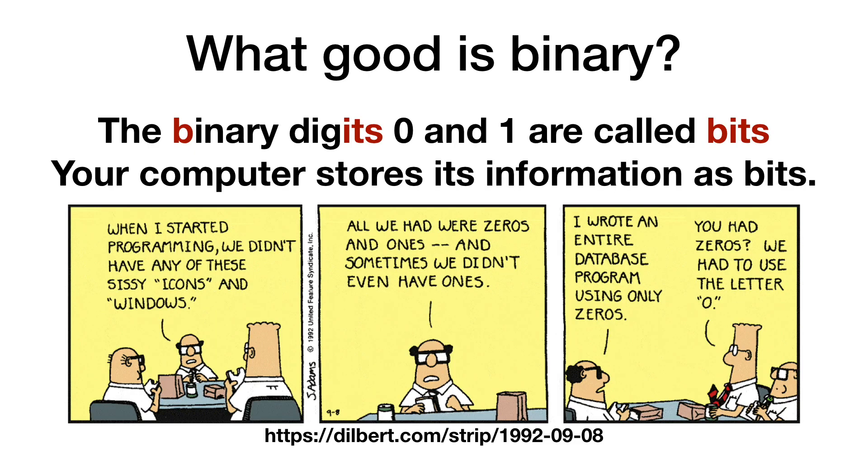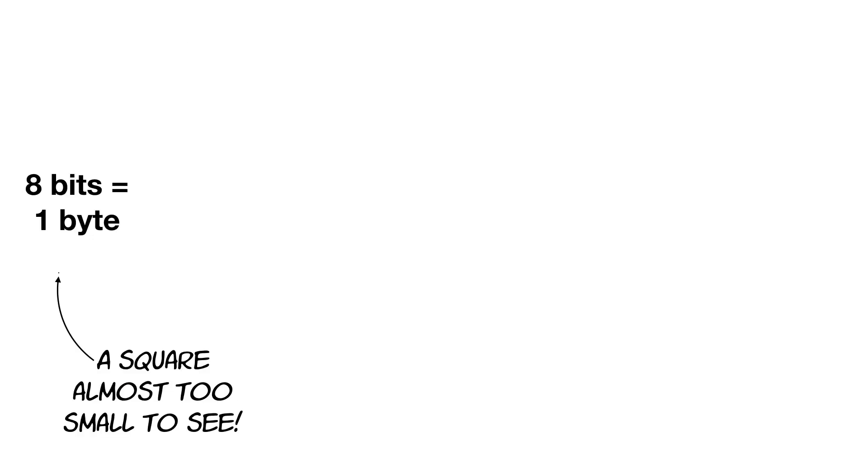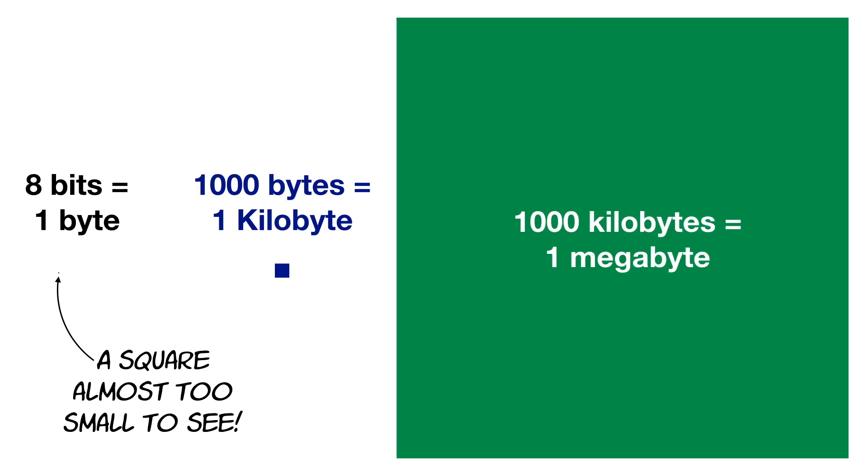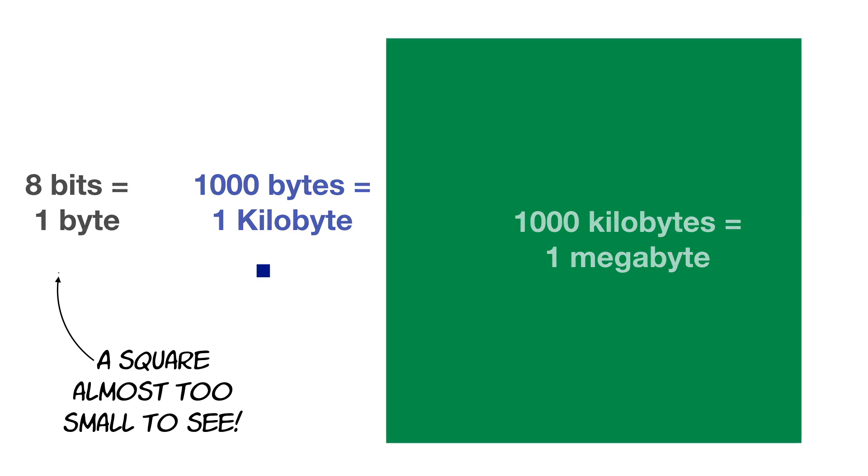You might be wondering, what good is binary? What's it used for? It turns out that it's used for a lot of things. Your computer stores all of its information using 0s and 1s. You might have heard of bits before. Well, bits is just a fancy word for binary digits. If you put 8 bits together, you get a byte. 1,000 bytes make up a kilobyte. 1,000 kilobytes is a megabyte, and 1,000 megabytes is a gigabyte.